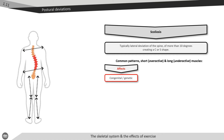More typical scoliotic deviations are non-structural forms. Non-structural scoliosis occurs post-injury or from unilateral loading through repetitive activity or poorly balanced resistance training programs. Non-structural scoliosis can be significantly improved with suitable corrective exercise.